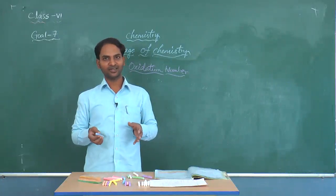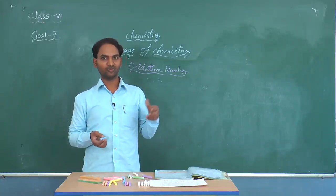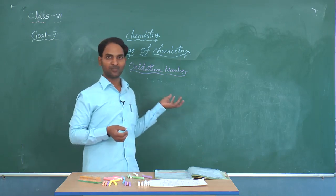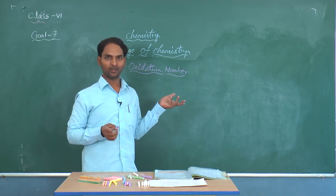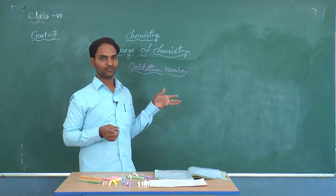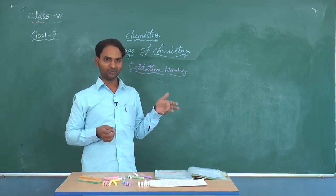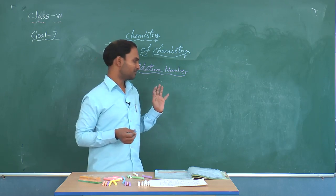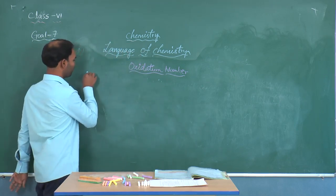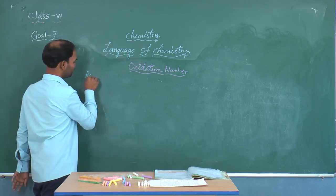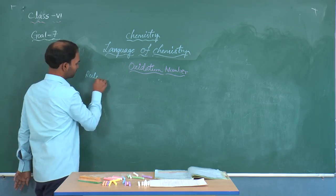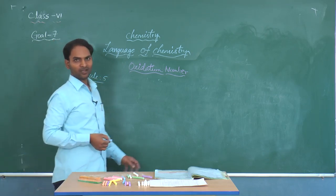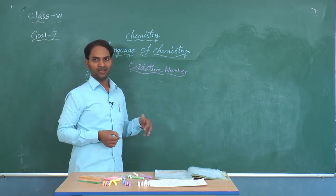We have already studied the rules for oxidation number in the previous session. Four rules we have seen; further rules we are going to discuss now. There is Rule 5.